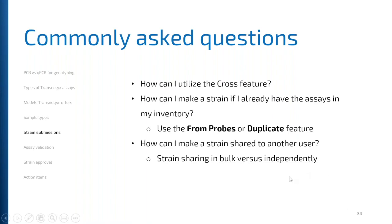You're also welcome to use our strain sharing features — either independently or in bulk. To share independently, go to My Strains, click the strain of interest, and use the Share Strain tab to enter emails and send. To share in bulk, go to the blue task bar, My Strains, Share Strains, and click the blue Share Strains button to populate all strains in your account. Note: if you're a parent user, you'll see all strains across all accounts including sub-users. If you're a sub-user, you'll only see strains in your own account.